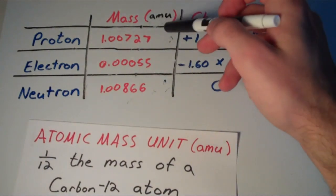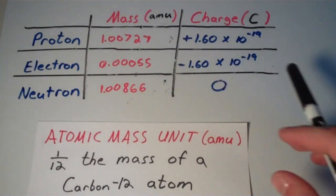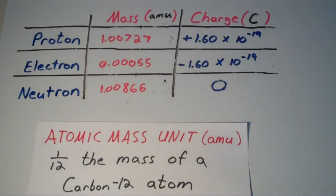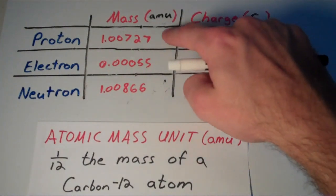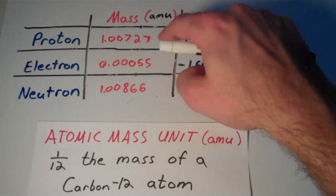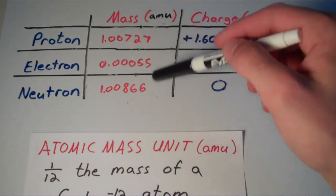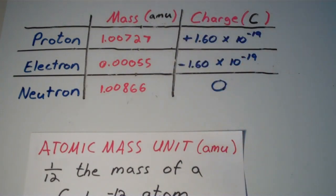Like I said, notice that the masses of the proton and the neutron are almost equal. So in practice, we usually say that the mass of a proton is 1 AMU and the mass of a neutron is also 1 AMU. That just makes our calculations a little bit easier. But it's important to know that the neutron is slightly heavier than the proton.